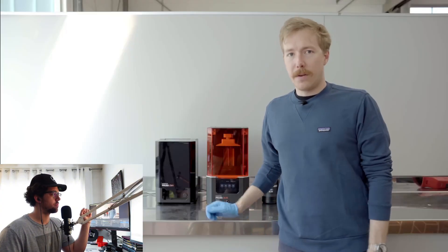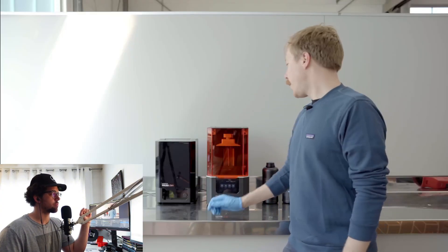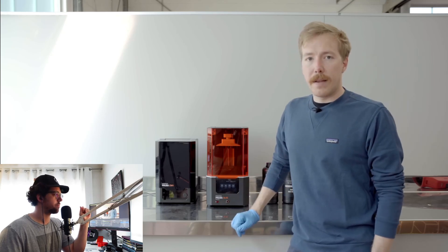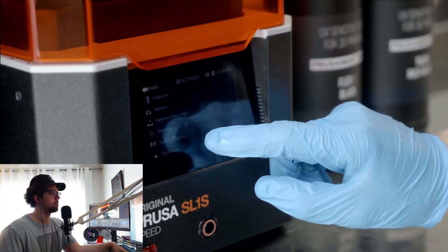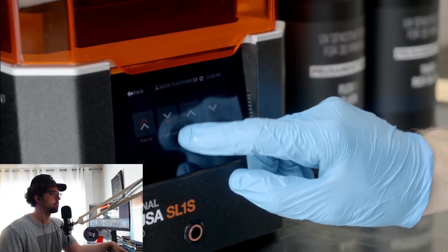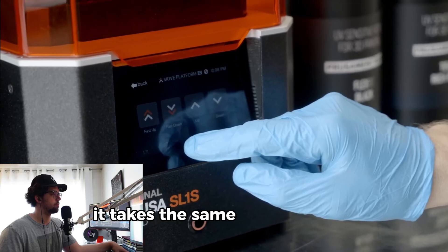This is our SL1, we use it to prototype all our parts that need really thin details and really small parts. The good advantage is that doing one part or printing the full bed takes the same time.